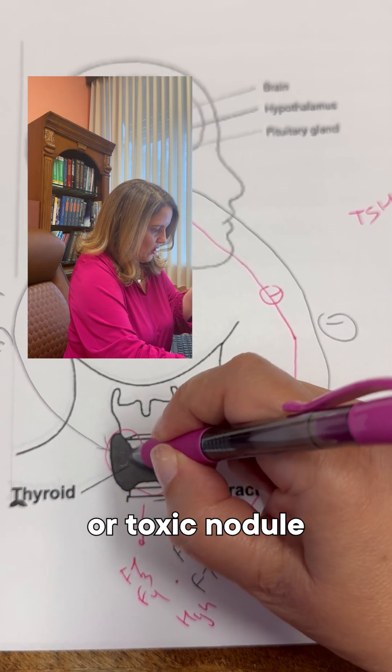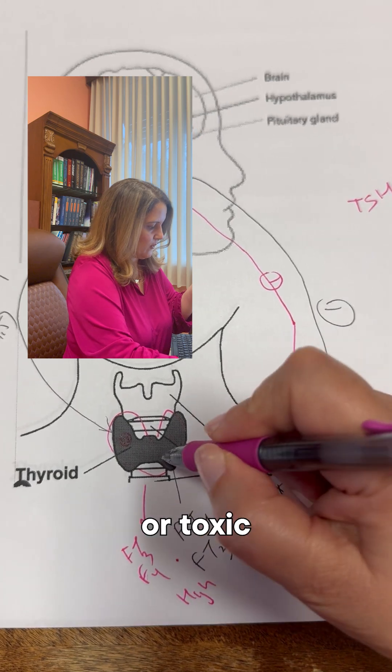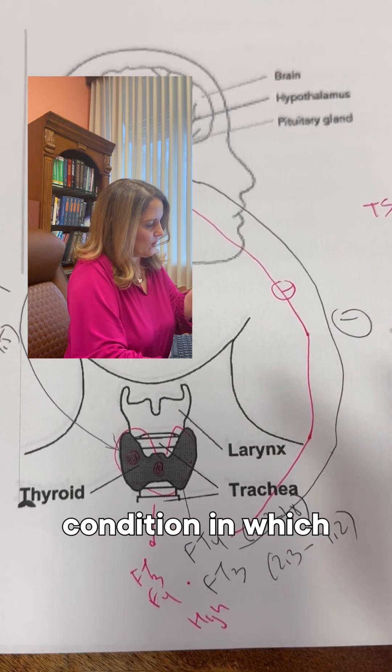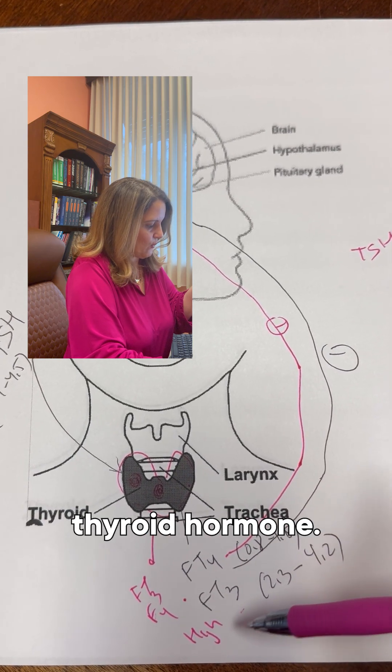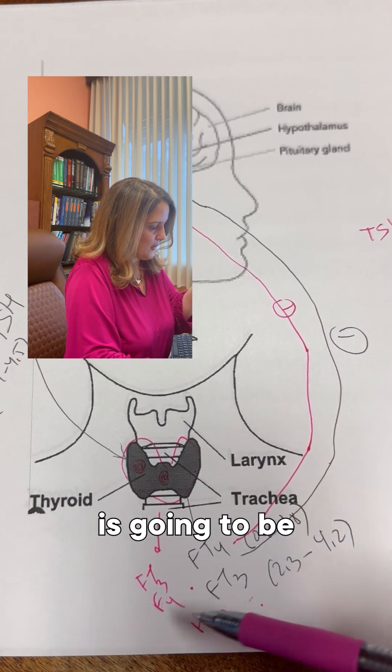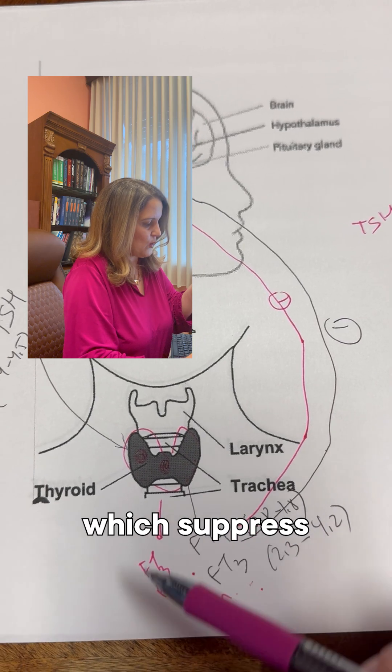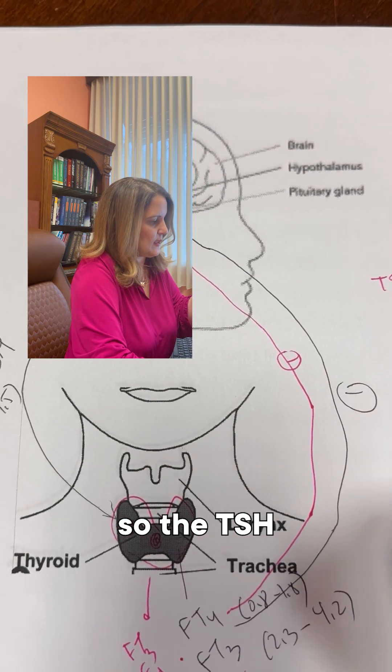or a toxic nodule or multiple toxic nodules that make too much thyroid hormone; or another condition in which the thyroid gland breaks down and releases too much hormone into the body. In all these conditions, you'll have too much free T4 and free T3, which suppress the pituitary, so the TSH will be low.